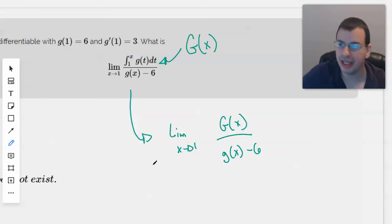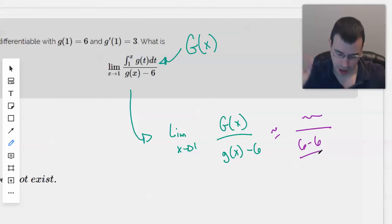And when we put in our values, we don't know because we don't know what big G of x is. But we do know that g of 1, so this will be some value over 6 minus 6, which is 0, and you can't divide by 0, end of the universe and such.